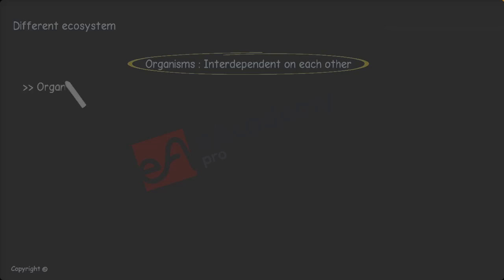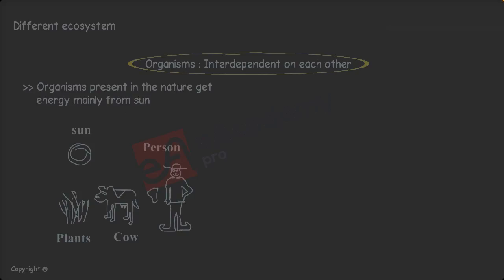All the organisms present in nature get their energy mainly from the sun. So sun is the main source of energy for all organisms. Plants prepare food by taking energy from the sun.